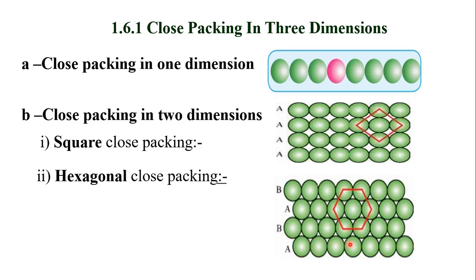Here the apex is pointing in the downward direction, and here the apex is pointing in the upward direction, and again downward — an alternate arrangement of apices pointing downward and upward is observed in hexagonal close packing. Here more space is occupied by the spheres and voids are less, so packing efficiency is more in case of hexagonal close packing compared to square close packing. Both these close packing types — in one dimension and two dimension — we have studied in the last lecture.